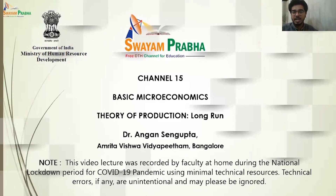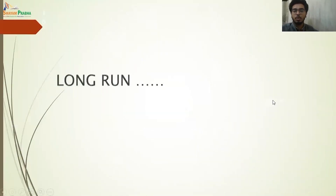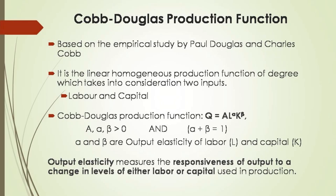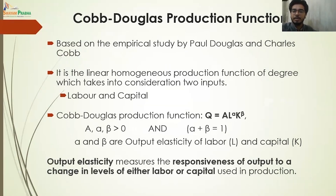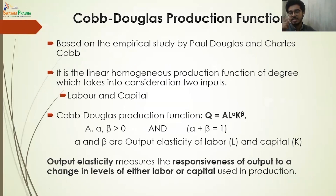Today we will discuss about the long-run production function, where we will change both the factors of production — both the inputs. We will start with the Cobb-Douglas production function, which was developed by Professor Paul Douglas and mathematician Charles Cobb together based on empirical research. Here we have seen that quantity of output Q is a function of labor L and capital K.